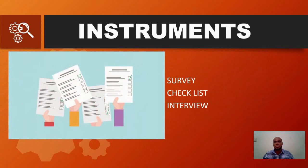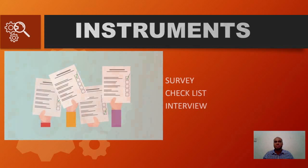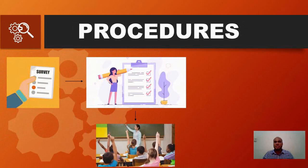The instruments used in this research were the survey, the checklist, and the interview. To collect the information, the 10 English language classes were surveyed within three weeks. A definite class inspection checklist was used to gather the information. Then, 10 experienced English faculty members were interviewed over five days, and finally the data was collected from the students in one day.